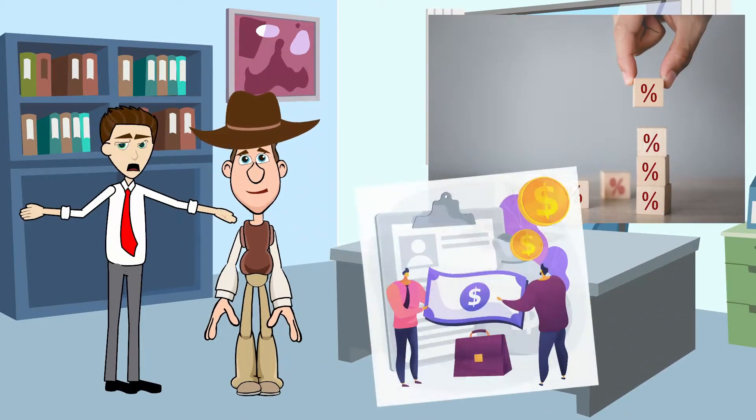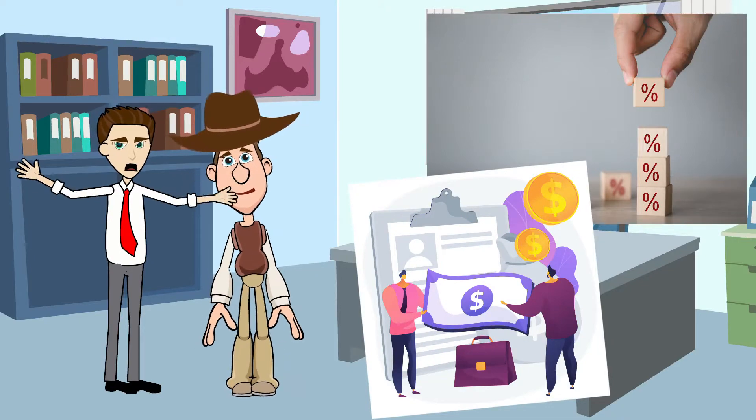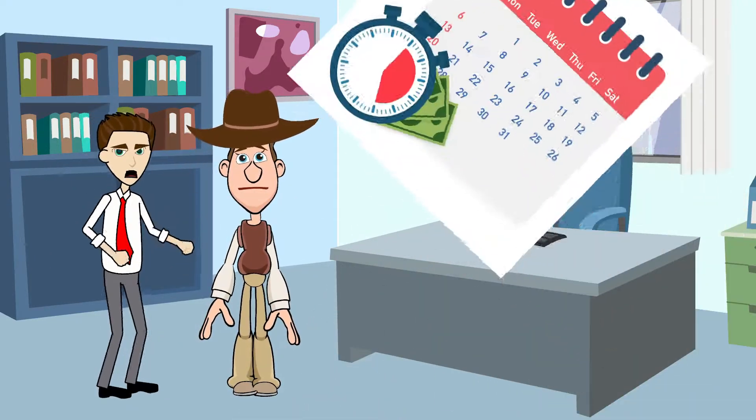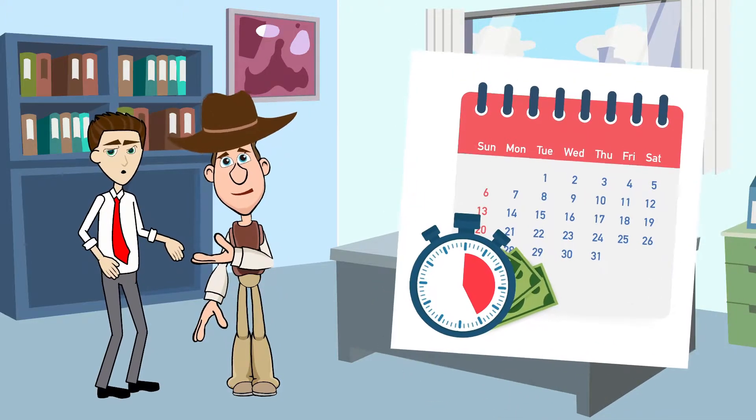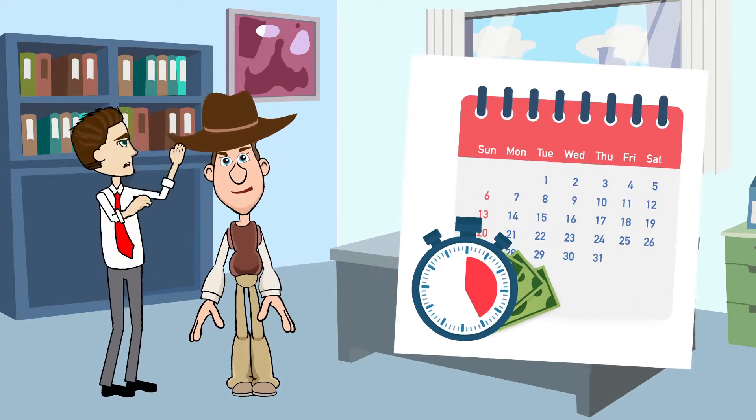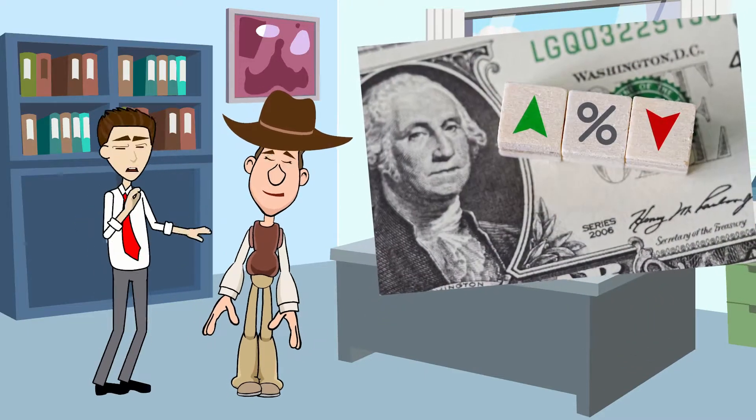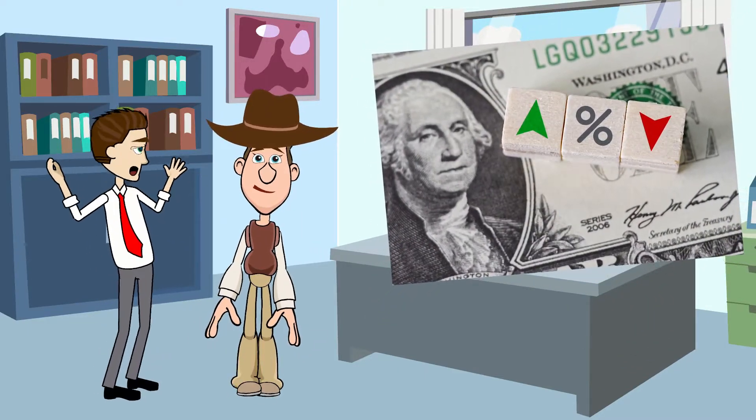Interest rate is the extra amount paid by the borrower to the lender for providing a loan expressed as a percent. Interest rate is usually quoted per year, but sometimes it could be quarterly or monthly. Interest rates can be fixed or variable through the life of the loan.